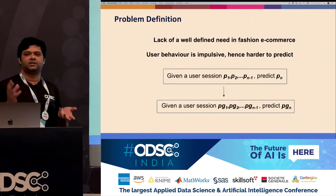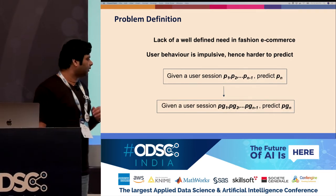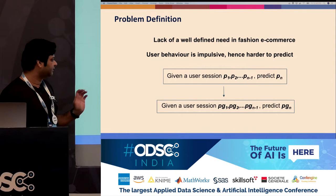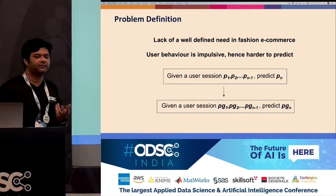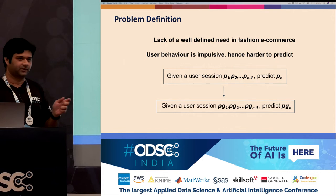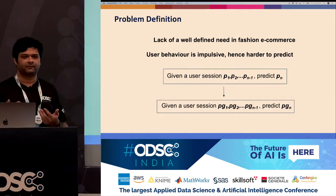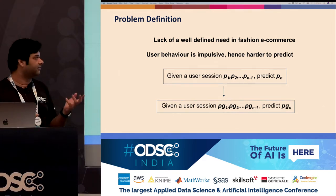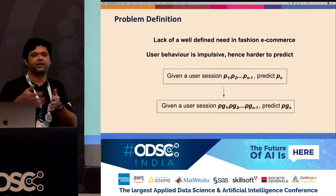We make a slight change to our problem definition: instead of predicting the next product, we replace each product with its corresponding product group. The problem becomes: given a user session with some product groups seen, what is the next product group? This allows us to deal with sparsity — if a new product comes in tomorrow, we map it to the relevant product group using attributes, and we can use the same model built at the product group level without retraining.